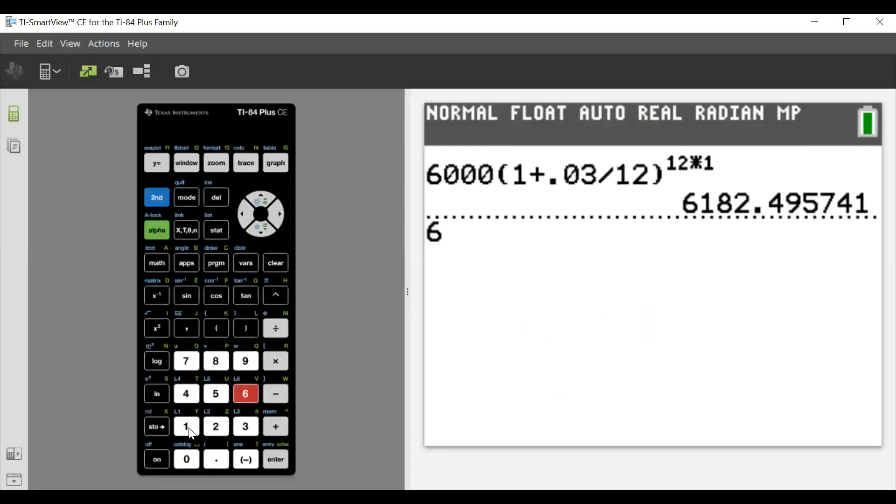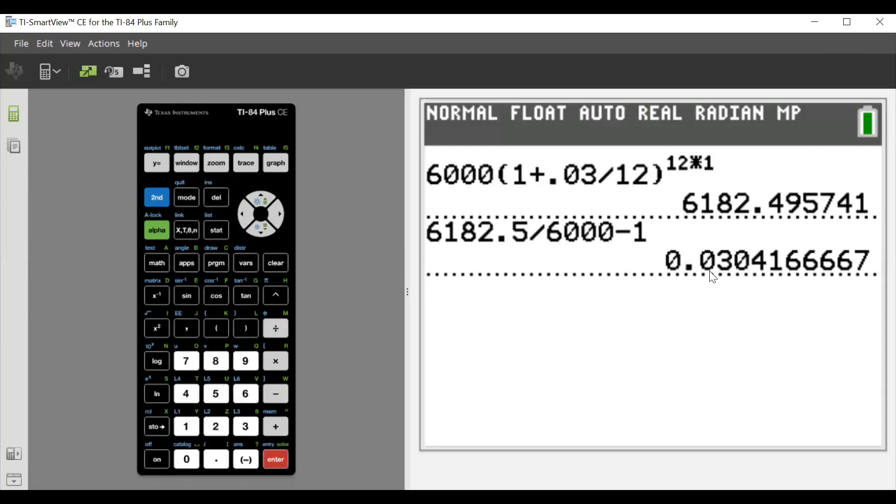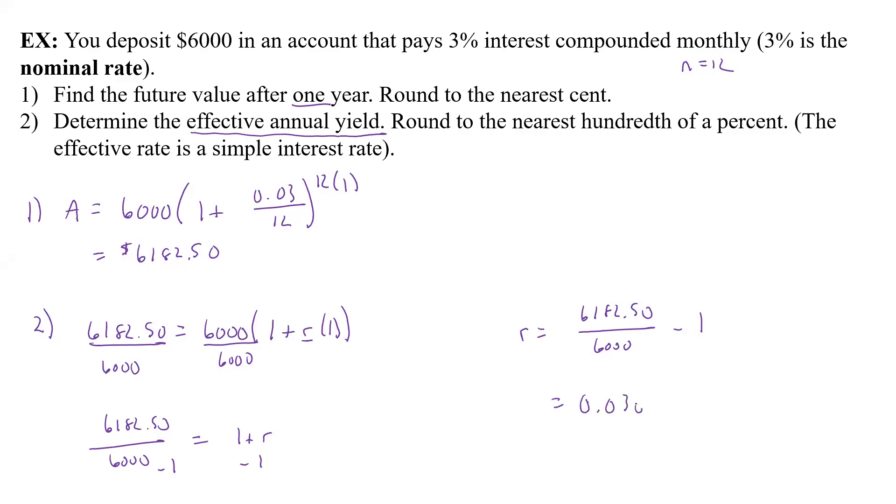We have 6182.50 divided by 6,000, not 60,000, and then minus 1. We do it all as one calculation and we get 0.030416666. Plugging that back over here, we get 0.03042, and we want it to the hundredth of a percent. We have to move the decimal twice, so that's going to be 3.04%. The 2's not going to round up to 4. That's going to be our effective annual yield.